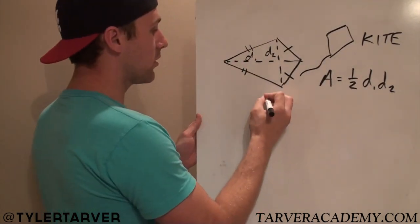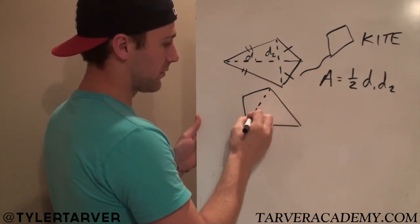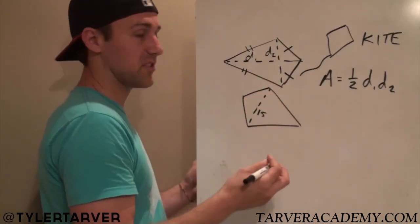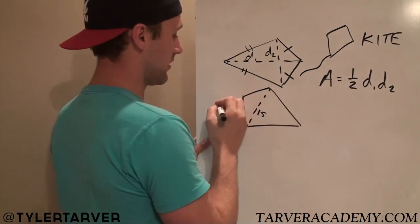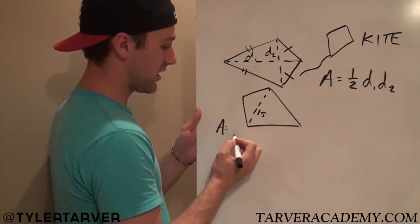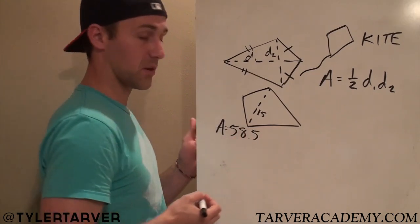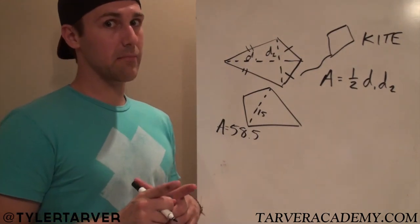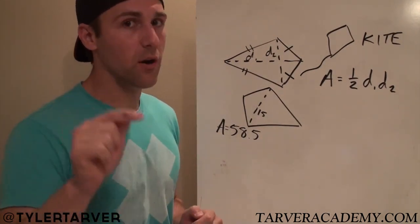Okay, let's do one where we know, let's say, here's the kite. I tilted it to make it a little more different. Say that's 15. One diagonal is 15. Let's say they don't give you the other diagonal. Let's say they give you the area. Let's say they tell you the area is 58.5. Okay? Let's use my old saying. This is what I always say. What I always say in math, plug in what you know to find what you don't know.